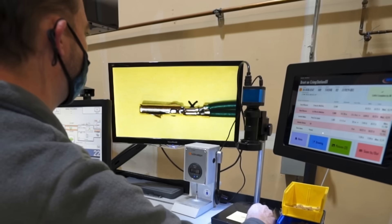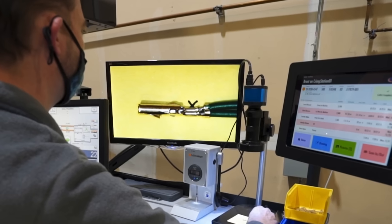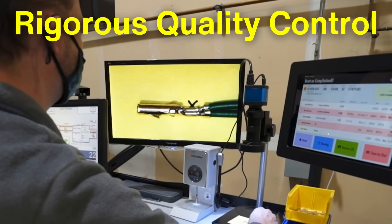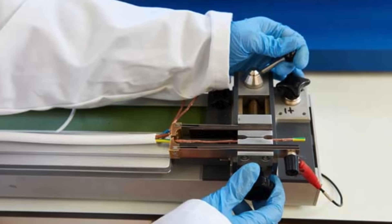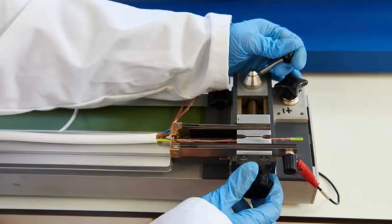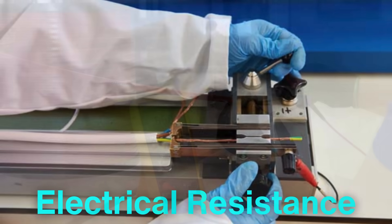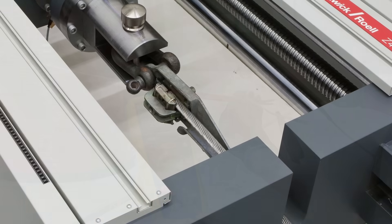After the insulation process, the wires undergo rigorous quality control. Manufacturers test the wires for a variety of factors, including electrical resistance, insulation integrity, and mechanical durability.